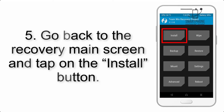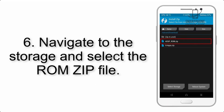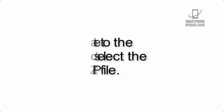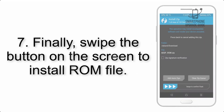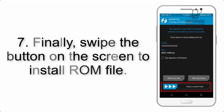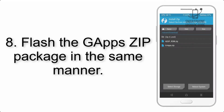Step 5: Go back to the recovery main screen and tap on the Install button. Step 6: Navigate to the storage and select the ROM zip file.